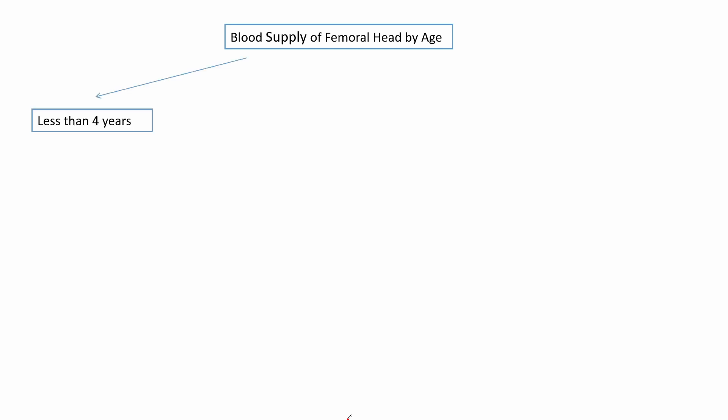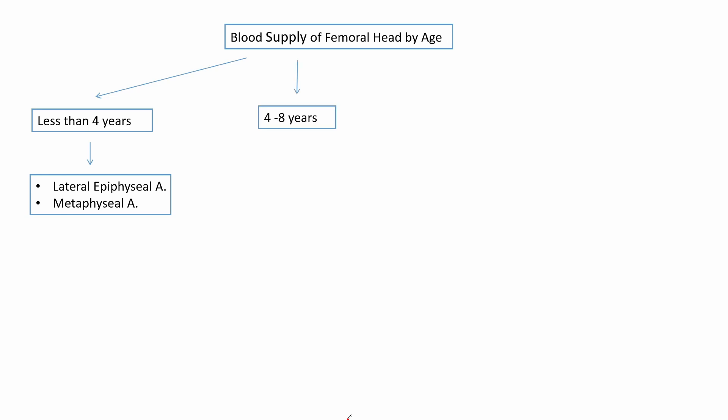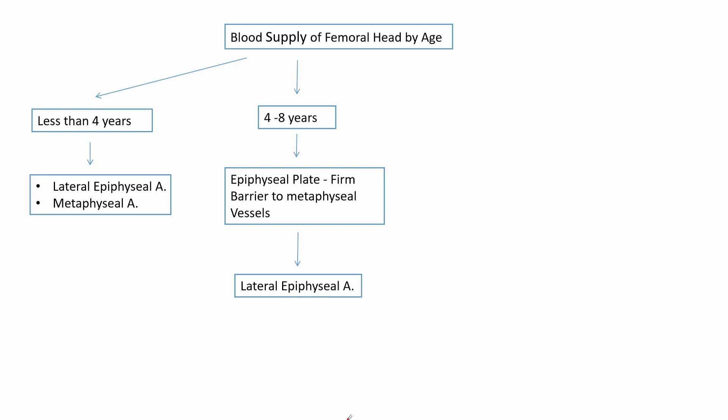Blood supply of the femoral head by age. In children less than 4 years, the blood supply is provided by the lateral epiphyseal arteries and the metaphyseal arteries. The lateral epiphyseal arteries derive their supply mainly from the medial circumflex femoral artery, whereas the metaphyseal arteries derive their supply from the extracapsular synovial ring. Between 4 to 8 years, the epiphyseal plate becomes a firm barrier to metaphyseal vessels, so the only supply is via the lateral epiphyseal arteries.